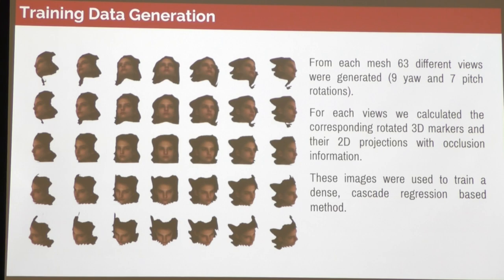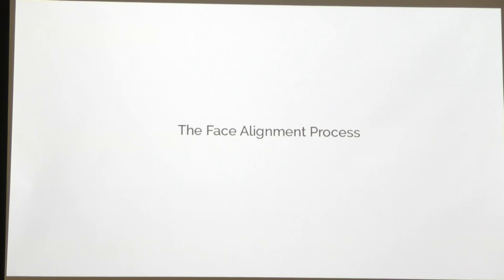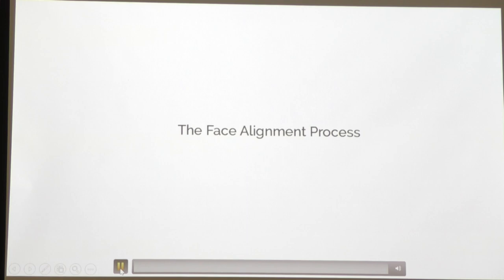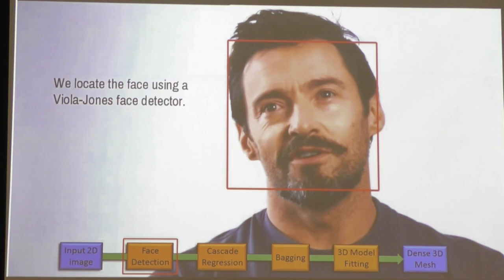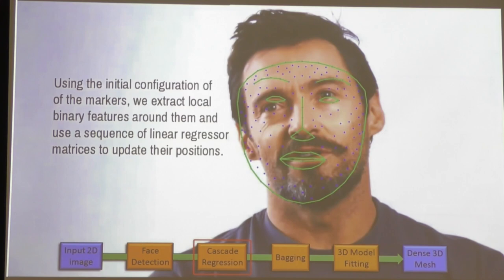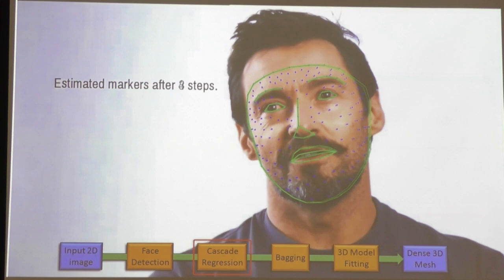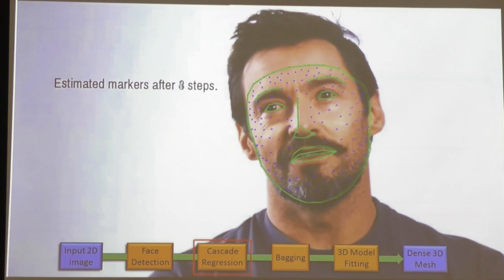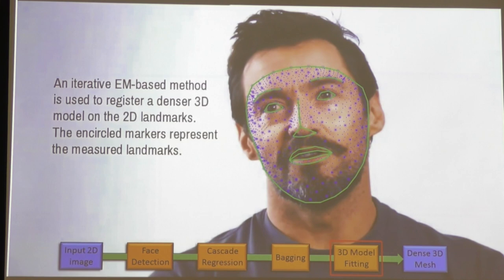The alignment process takes a single 2D image, uses a face detector — Viola-Jones — to find the face, and starts with an initial frontal-looking template. Around each marker, you extract a feature descriptor — in my case a binary feature — and learn a linear mapping from that marker to the ground truth location. After iterating this process, it converges within four steps. With bagging you can alleviate noise and register a very dense 3D mesh on the 2D annotation, obtaining a 3D structure of the face.